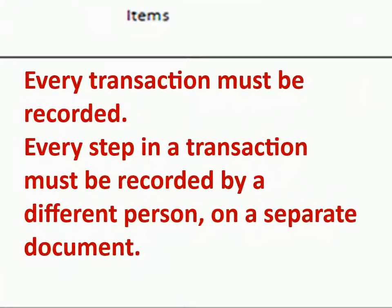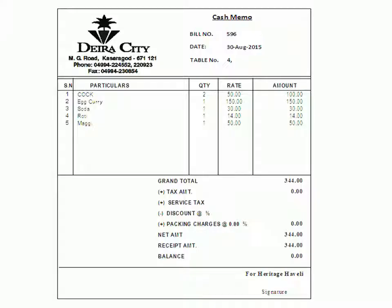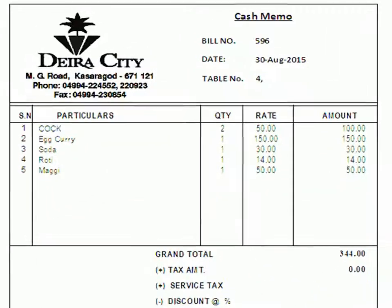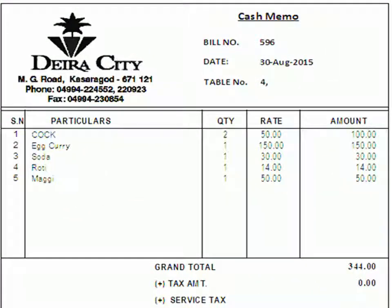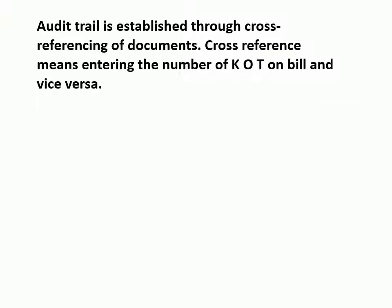Every transaction must be recorded, and every step in a transaction must be recorded by a different person on a separate document. KOT data is recorded in a bill or check voucher. An audit trail is established through cross-referencing of documents. Cross-referencing means entering the number of the KOT on the bill and vice versa.